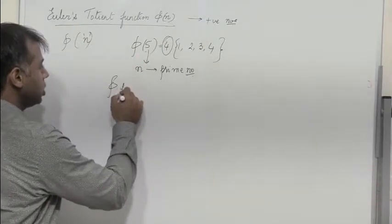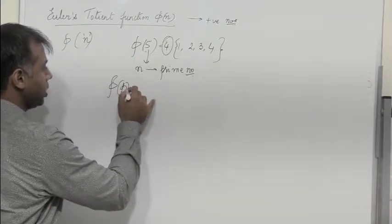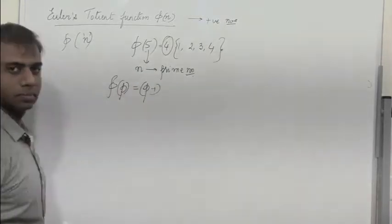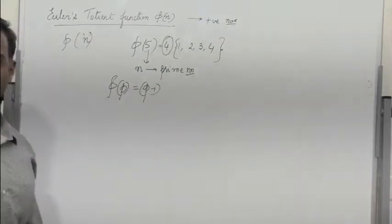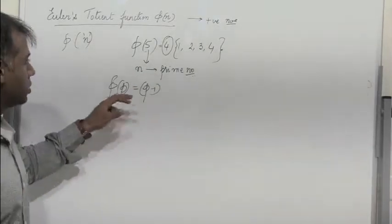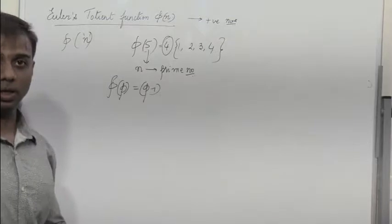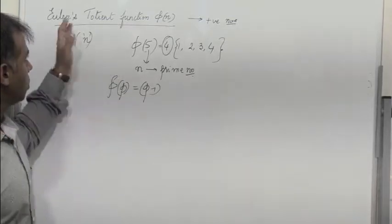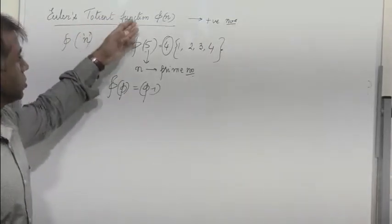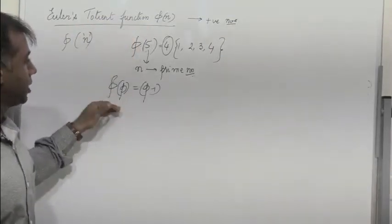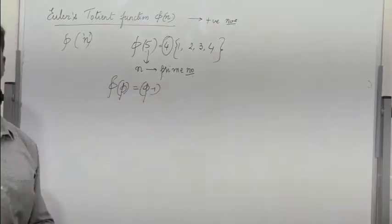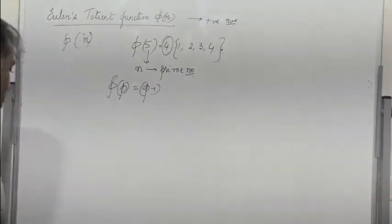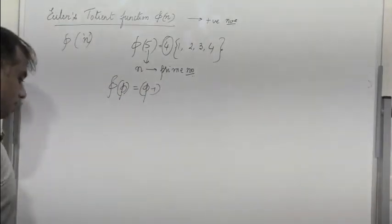In general, phi of p equals p minus 1, where p is a prime number. So to find Euler's Totient function for a prime p, it is simply p minus 1.